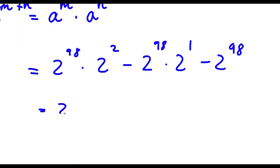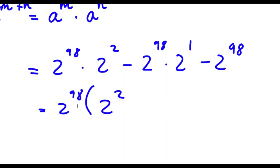So now if I factor out 2 to the power of 98, I get 2 to the power of 98 times: 2 to the power of 2 (from the first term), minus 2 to the power of 1 (from the second term), minus 1 (from the third term).